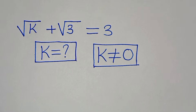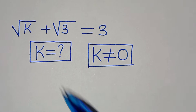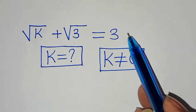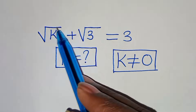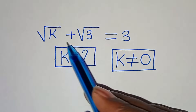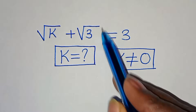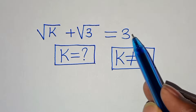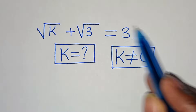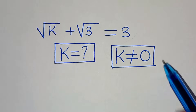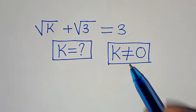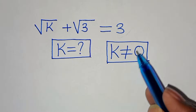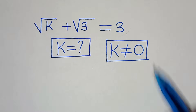Hello everyone, you are welcome to solve this nice algebra problem: the square root of k plus square root of 3 is equal to 3. What is the value of k, given that k is not equal to 0?